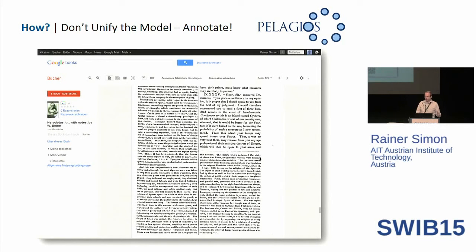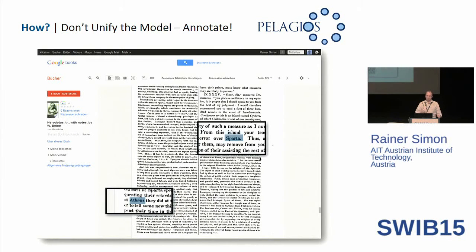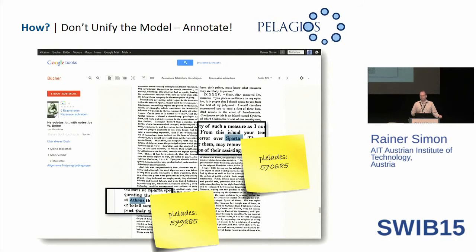Here's an example of how that works. What we see here is one page from Google Books — an English translation of the Histories by Herodotus, which is full of references to places like Athens and Sparta. As a human reader that's clear, we know Athens is a place, specifically ancient Athens in Attica, not the capital of modern Greece. To computers, that's not obvious. So we want to have unambiguous identifiers and annotate the content with those. In this case we assign identifier Pleiades 579885 for Athens, and Pleiades 570685 for Sparta.